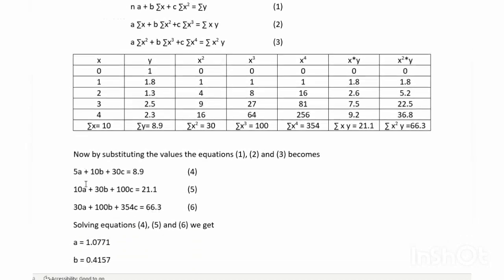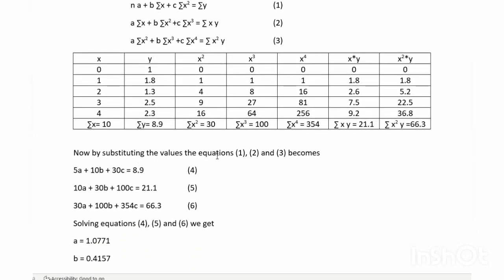By substituting the values, equations 1, 2, and 3 become: 5a plus 10b plus 30c equal to 8.9; 10a plus 30b plus 100c equal to 21.1; 30a plus 100b plus 354c equal to 66.3, which are taken as equations 4, 5, and 6 respectively.